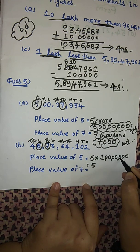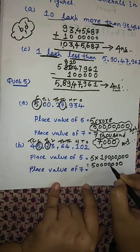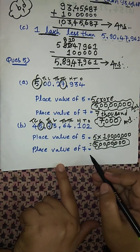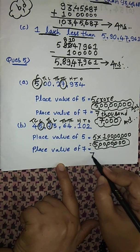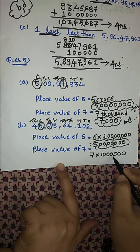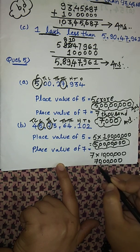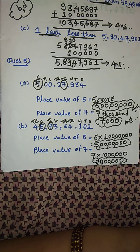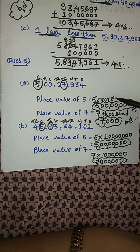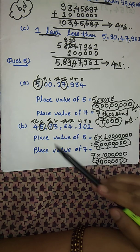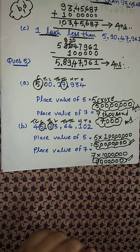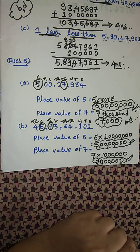5 ones are 5, so place value of 5 is 5 followed by seven zeros — that is 5 crores. Similarly for the next part: 7 is situated at the ten lakhs place, so 7 × 10 lakh = 70 lakhs. So seventy lakh is the place value of 7. I have shown you two ways: write the place value in words then convert to figures, or multiply the digit by the value of its place to find the product.